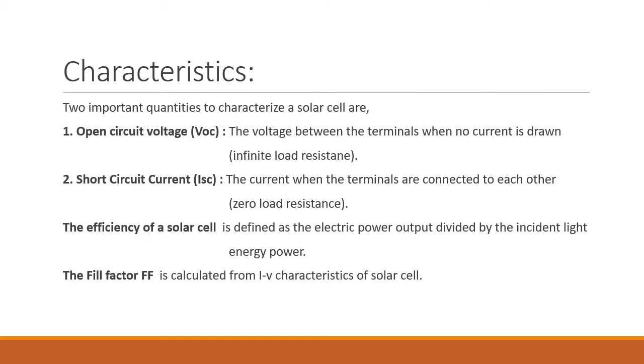Now, the two important quantities to characterize the solar cell are, first one is VOC which is the open circuit voltage and next one is ISC which is the short circuit current. Now, open means you must consider the infinite load resistance because the voltage between the terminals is measured when there is no current. No current means zero current. From the Ohm's law, I equals to V upon R and I will be zero only when R is infinity. That is why infinite load resistance.